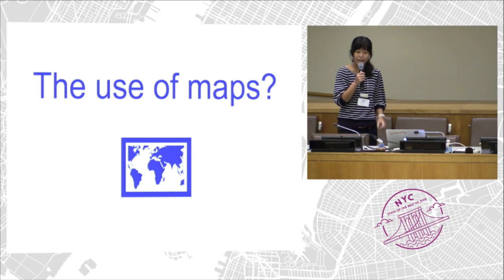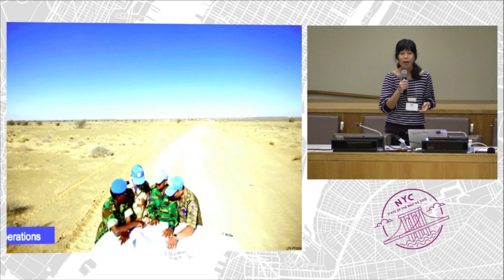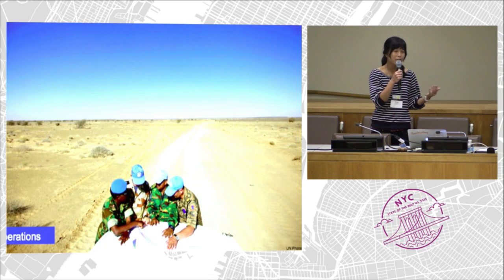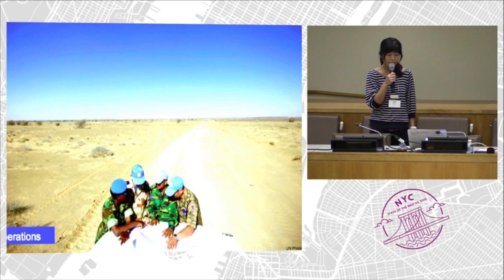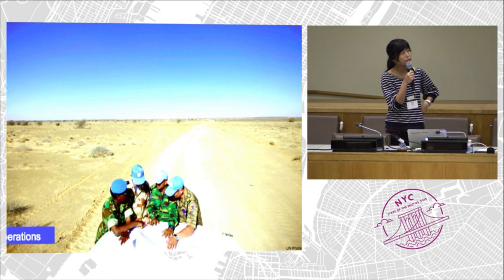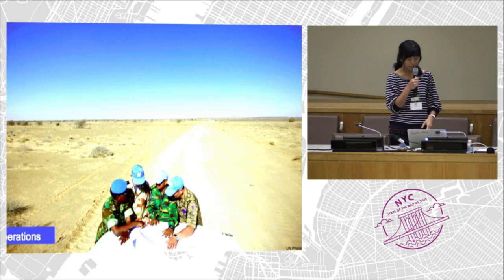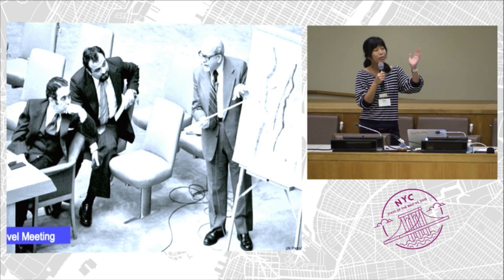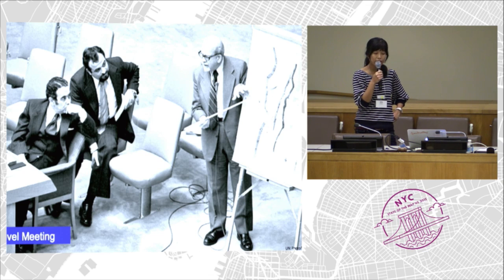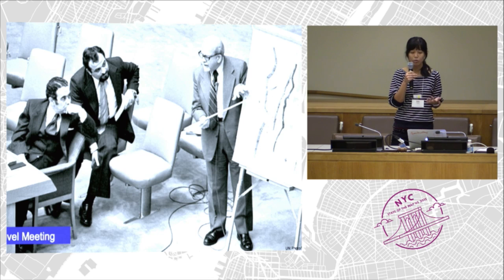Now let's go more closely to the subject: the use of maps. How are we using maps in our work? It was great to have presentations from Peace Corps and American Red Cross, because we do similar work, especially in developing countries. This is an example of peacekeepers using maps to orient themselves in the desert. And this is another example — a picture from 1979 during the Security Council, showing discussions about security issues in the West Bank.